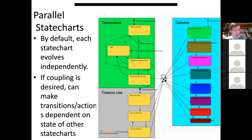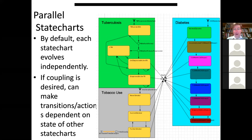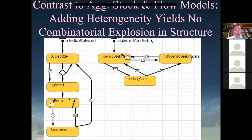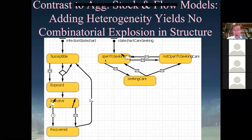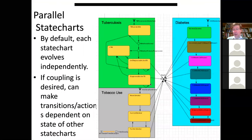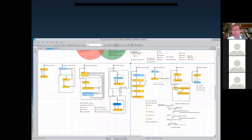We can have parallel state charts, and each state chart by default evolves independently, but coupling is possible — one state chart can change the rates by which another evolves, send messages to other state charts, or change the variables on which conditional transitions depend. For example, someone being infective with very serious symptoms might lead them to transition from not open to seeking care to open to seeking care, or from open to actually seeking care.